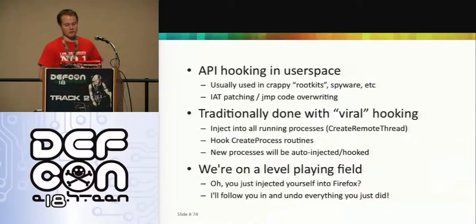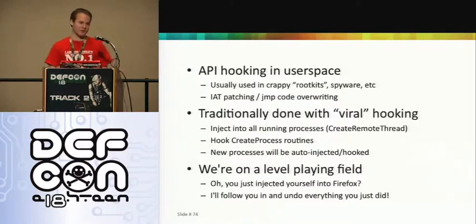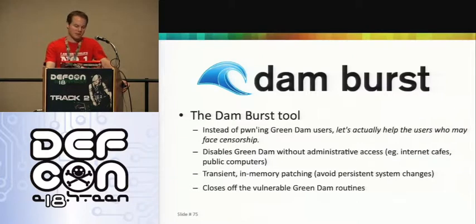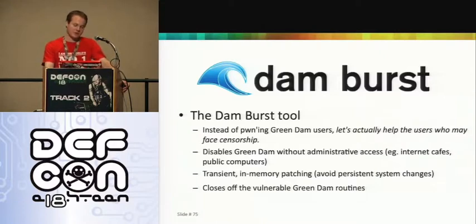Green Dam injects itself into a list of processes — Firefox, Notepad, and others — and we can go in and un-inject all of the Green Dam code that's been placed there. I wrote a tool called Dam Burst, which is interesting because security researchers don't usually get to use these skills for good purposes. The same techniques Dam Burst uses are good for writing rootkits, but here we can use this functionality to help users facing censorship — technically interesting with a positive side effect for society.